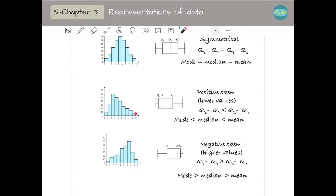If we have lower values, so instead of being symmetrical, our graph tends towards lower values, we have positive skew. So in a box plot, we look something like this. The difference between Q2 and Q1 is smaller than the difference between Q3 and Q2, and the mode is smaller than the median and smaller than the mean.